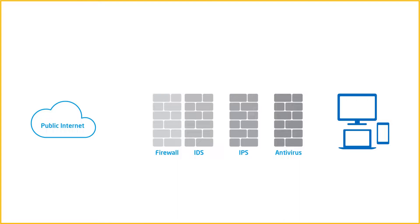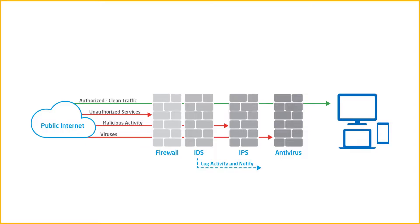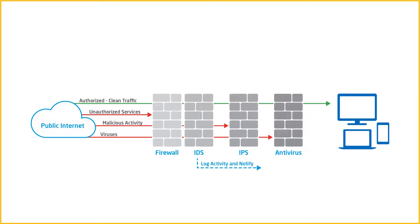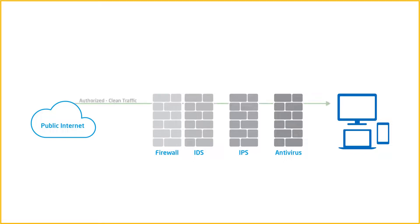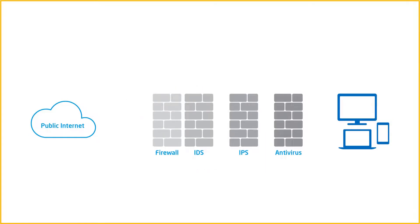An IPS also helps protect other security controls from attack and improves performance for those controls by filtering out malicious traffic before it reaches them. Most importantly, an IPS provides an additional layer of security by identifying and filtering out threats that other parts of the security infrastructure cannot detect.